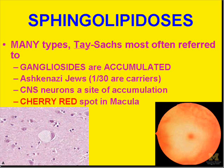Among the sphingolipidoses, the most famous is Tay-Sachs disease. Sphingolipidoses involve buildups of gangliosides and are present in very high frequencies in Ashkenazi Jews — in fact, one in 30 Ashkenazi Jews are carriers. You can calculate the frequency of the homozygous state from that. These sphingolipids build up in places where they cause the most damage, such as in neurons.